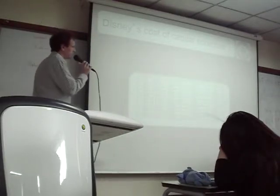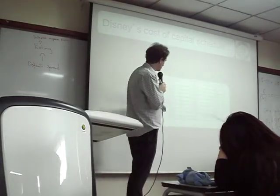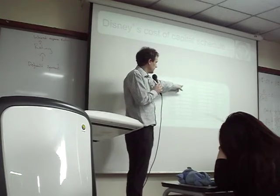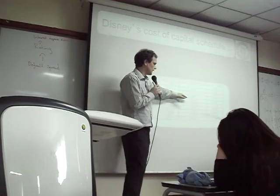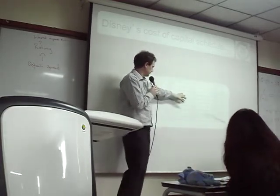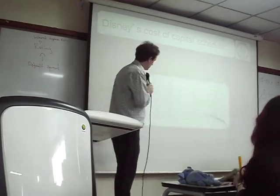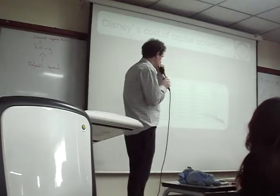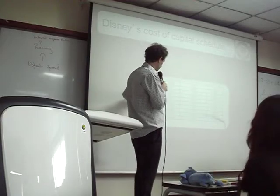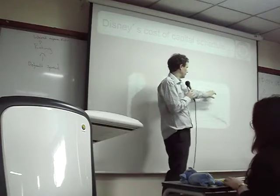Once we know the cost of equity and cost of debt, we can calculate our cost of capital at every level. We use after-tax cost of debt. Up to 20%, the cost of debt is the same — Disney has an AAA rating. Then the cost of debt starts to get more expensive. Cost of equity also goes up. On each level, we find the weighted average. For example, 10% debt multiplied by 90% equity gives a cost of capital of 7.68.